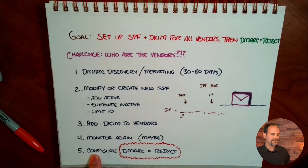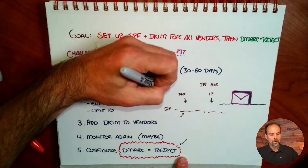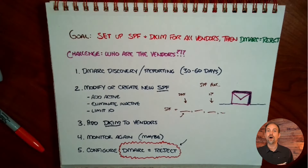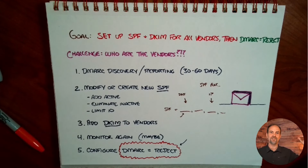The final step is to configure DMARC equals reject. As soon as you've done that, only the servers listed in the SPF and only the servers with DKIM configured are allowed to relay on behalf of your domain — everything else is blocked. Your email reputation goes through the roof, you have fantastic email reputation, and now DMARC is configured for your domain. That's what we'll call the five-step Jeremy process — not too complex, but also not too simple. Hope this has been informative for you, and thank you for being here.